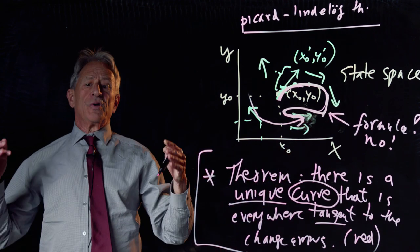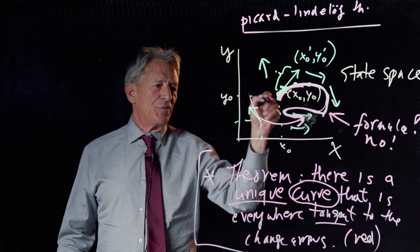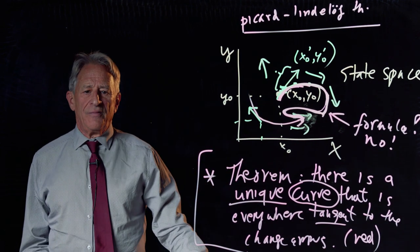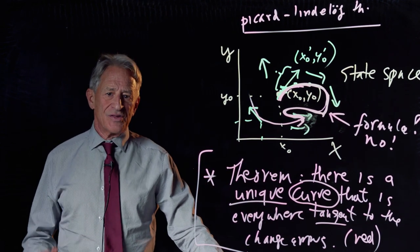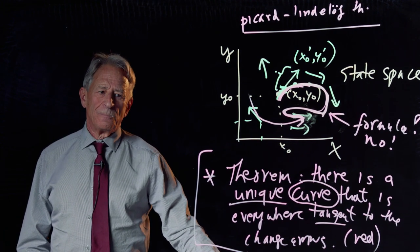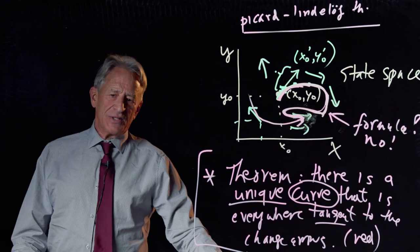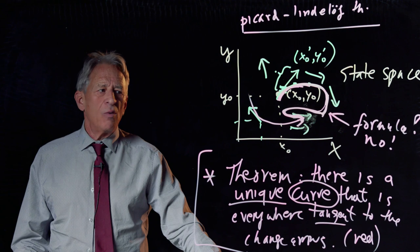And now you ask, what is the formula for those egg-shaped curves in the shark-tuna model? And the answer is, don't ask. There is no formula for those curves. They exist. It's proven that they exist. But their formula is unknowable.